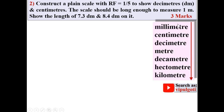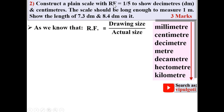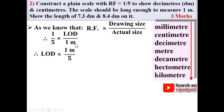As we know, RF = drawing size / actual size. Here RF is given as 1/5. So: 1/5 = LOD (length of drawing) / actual size. The actual size is given as 1 meter, since the scale should be long enough to measure 1 meter — that is the maximum length measured by the scale. So LOD = (1/5) × 1 meter = 1/5 meter.